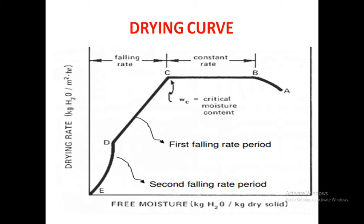First we are going to discuss about constant rate period. Refer the figure, point B represents equilibrium temperature condition of the product surface.